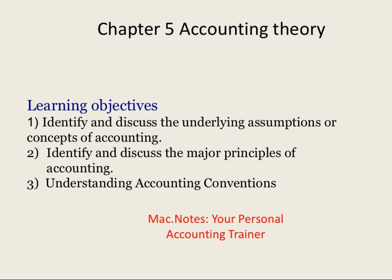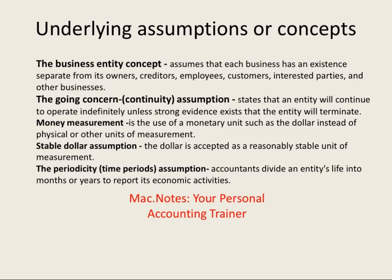To begin with, we've already talked about the business entity concept — that is the idea that a business has an existence separate from its owner. Secondly, we also assume that that business will be a going concern. If the accountant is aware that this business was planning to shut down, that would change the way.